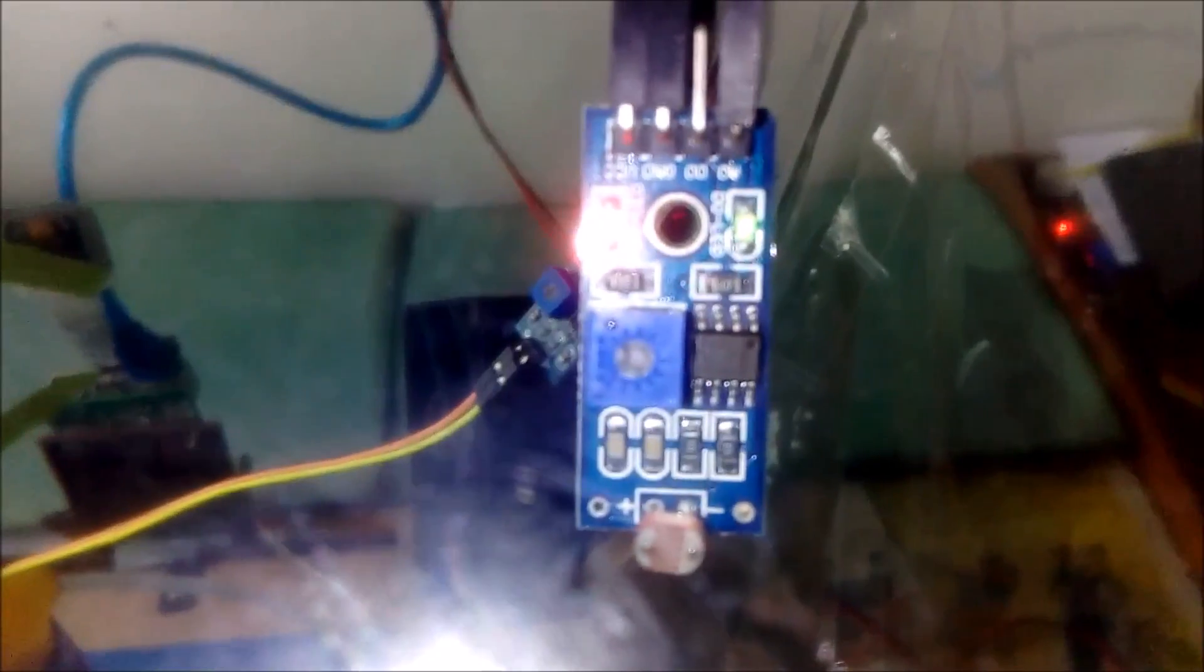Let's move to our sensors. This is a light intensity detecting sensor. We can measure light intensity and control bulbs according to it.